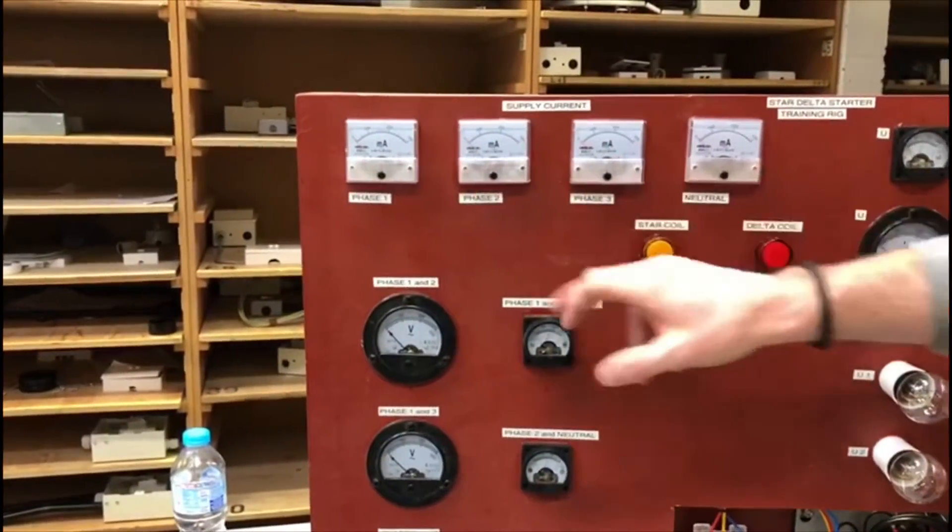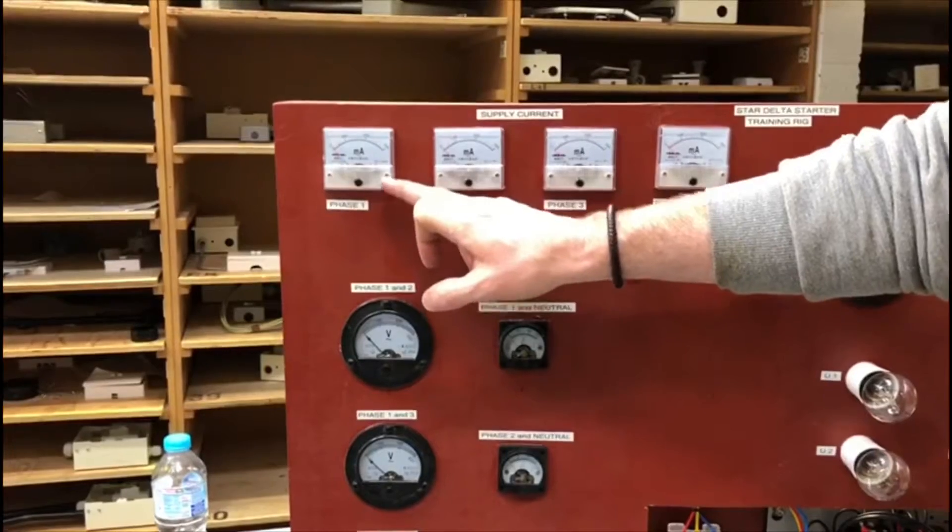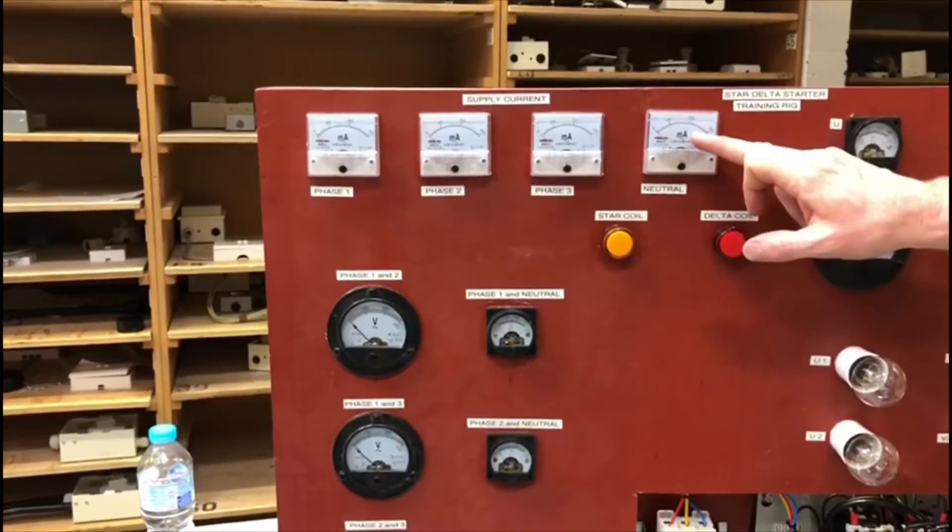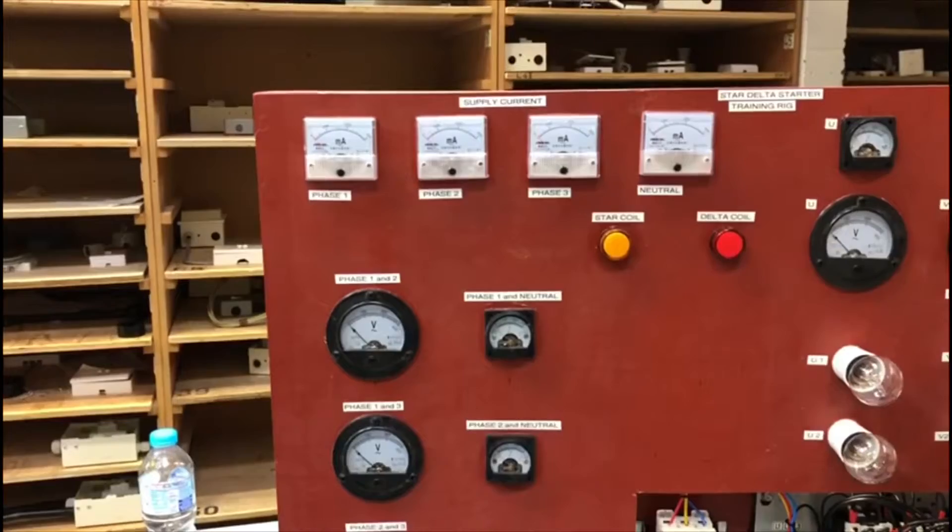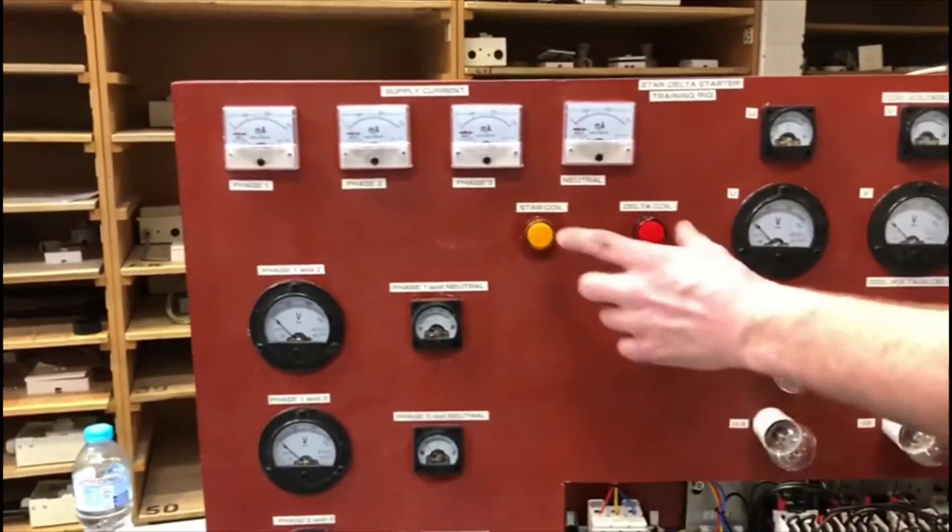At the top here we have ammeters, so we have the first three ammeters represent the currents going through each phase, and then we have an ammeter representing the neutral current. Most of the time that shouldn't really be working.